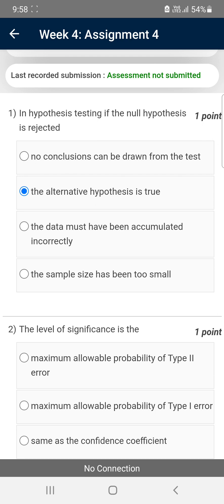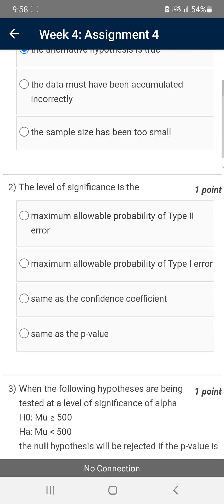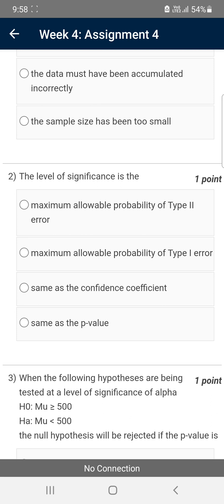You may miss the information in between the videos, so please watch the full video. Moving on to the second question. The level of significance is the—for the second question, the answer is again the second option, that is maximum allowable probability of Type I error. That is the second option.